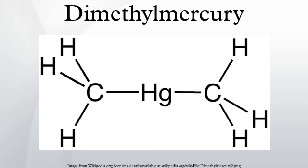Dimethylmercury currently has almost no applications because of the risks involved. As with many methyl organometallics, it is a methylating agent that can donate its methyl groups to an organic molecule. However, the development of less acutely toxic nucleophiles such as dimethyl zinc and trimethyl aluminium, and the subsequent introduction of Grignard reagents, has essentially rendered this compound obsolete in organic chemistry. It was formerly studied for reactions in which the methylmercury cation was bonded to the target molecule, forming potent bactericides.